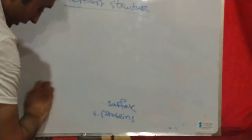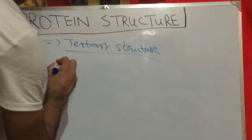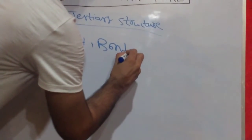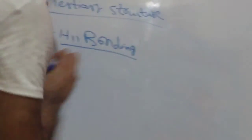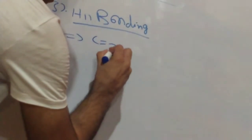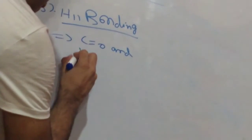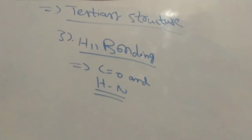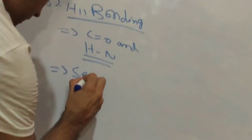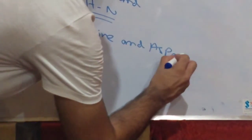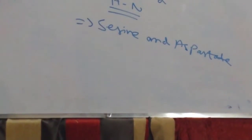Another bond that contributes to the stability of the tertiary structure is hydrogen bonding. Hydrogen bonding occurs between the oxygen of the carboxyl group and the hydrogen of the amide group. An example of hydrogen bonding in the tertiary structure is the bond between serine and aspartate.